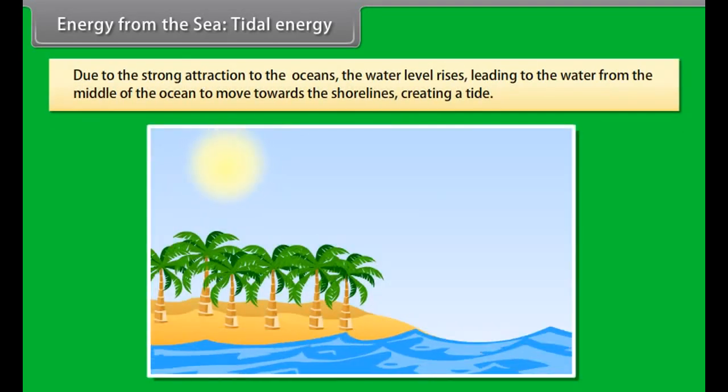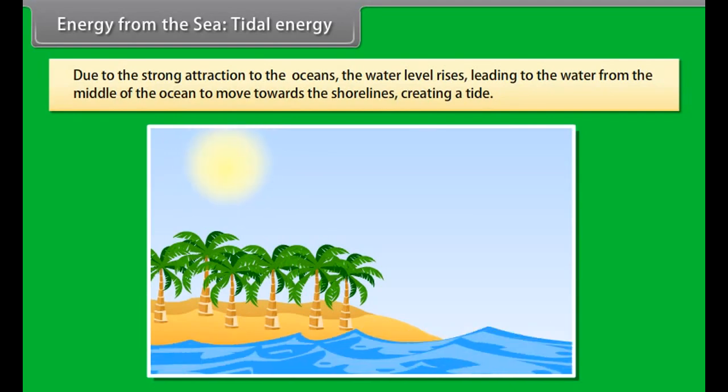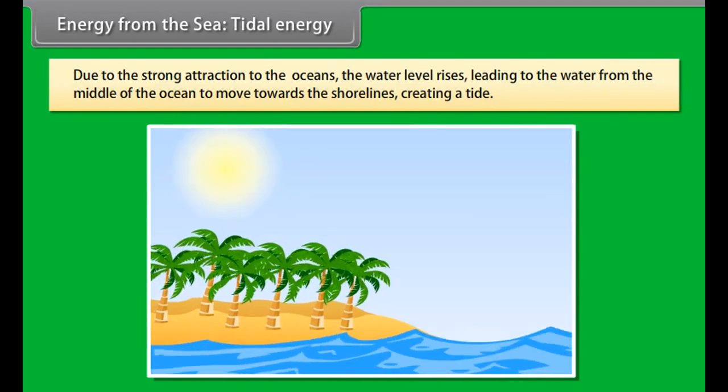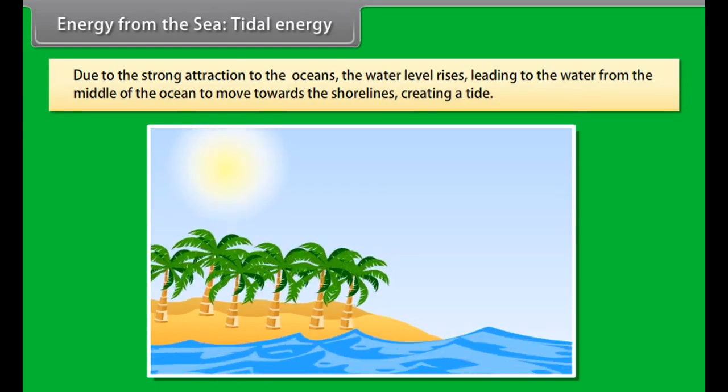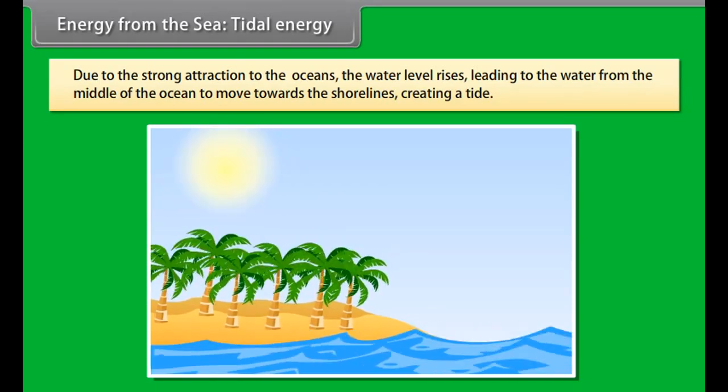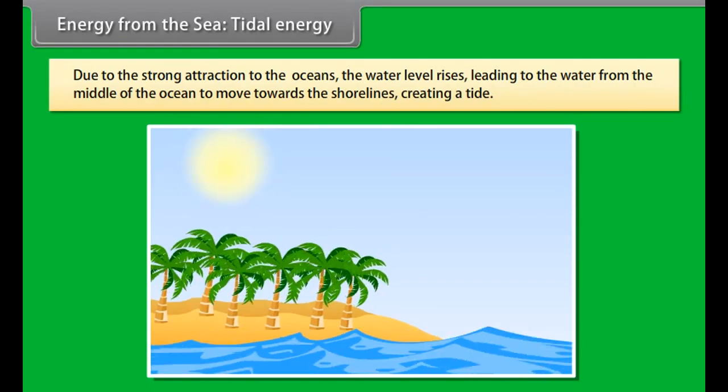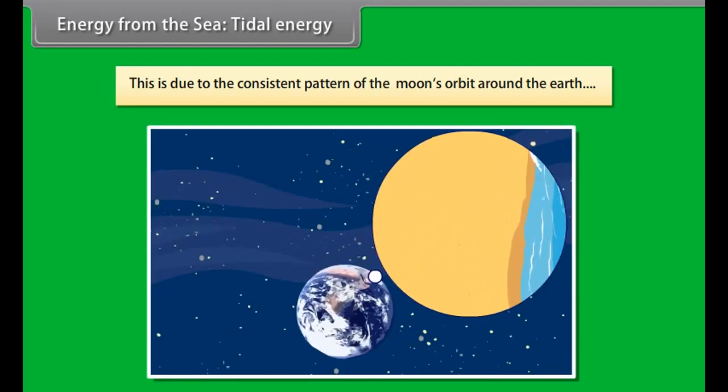Solar energy is derived from the radiant light and heat of the sun. It has been used by humans since ancient times for a range of technologies. Solar energy is used for architecture and urban buildings.